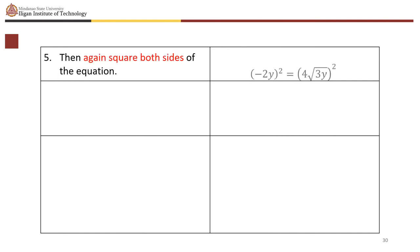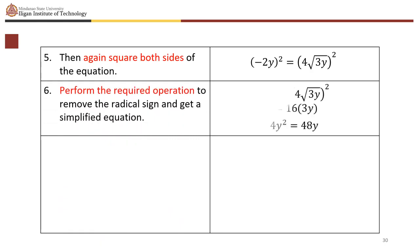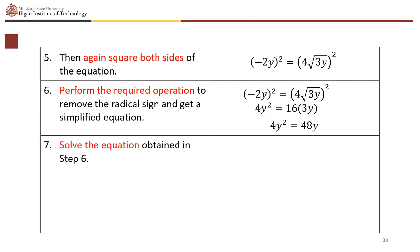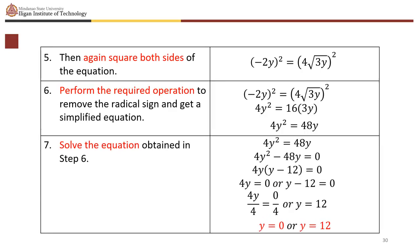Square both sides again: (minus 2y)² equals (4 times square root of (3y))², giving 4y squared equals 16 times 3y, so 4y squared equals 48y. Rearranging: 4y squared minus 48y equals 0. Factor out 4y: 4y(y minus 12) equals 0, so y equals 0 or y equals 12.